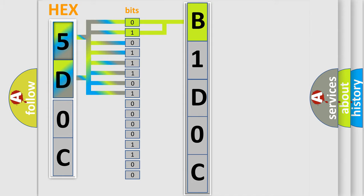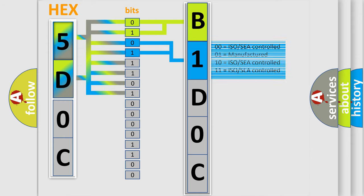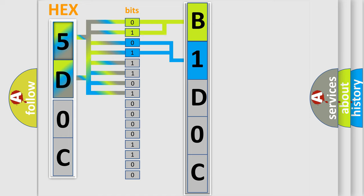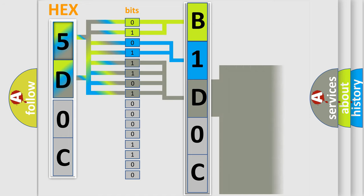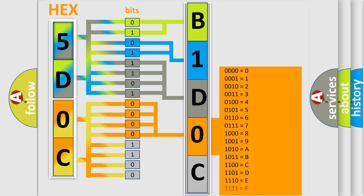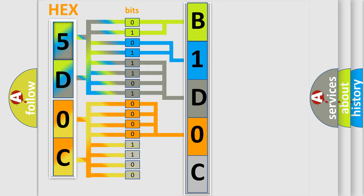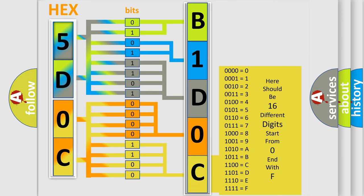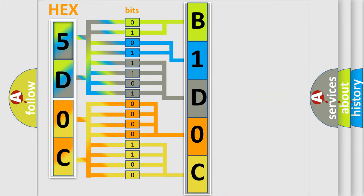The next two bits determine the second character. The last bits of the first byte define the third character of the code. The second byte is composed of a combination of eight bits. The first four bits determine the fourth character of the code, and the combination of the last four bits defines the fifth character. A single byte conceals 256 possible combinations.